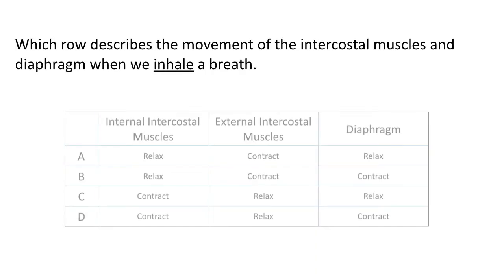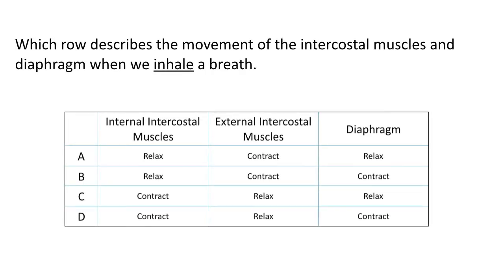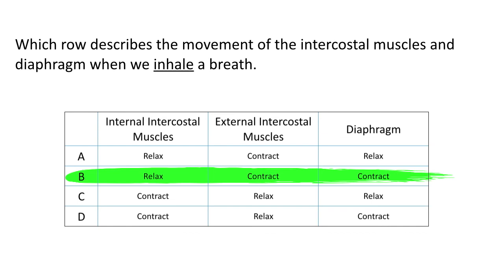Let's look at a possible exam question: 'Which row describes the movement of the intercostal muscles and the diaphragm when we inhale a breath?' If you know which muscles contract and relax at the right time, you should recognize that the answer is B — when we inhale, the internal intercostal muscles relax, the external intercostal muscles contract, and the diaphragm contracts.